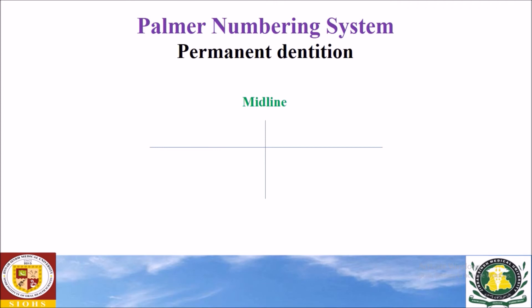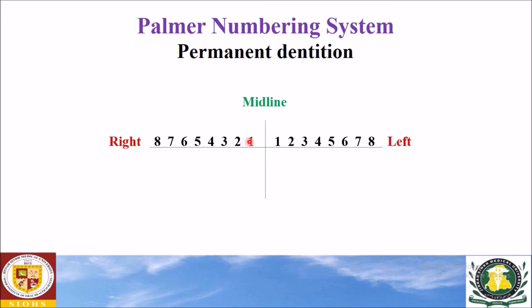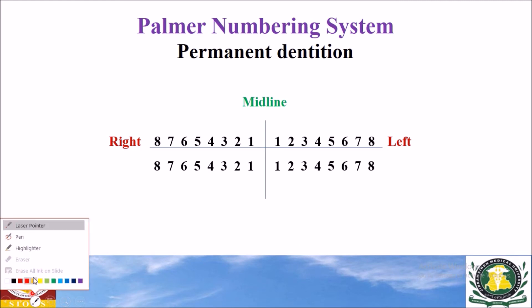Now we will discuss the Palmer numbering system for the permanent dentition. In the permanent dentition, each tooth is numbered starting from the midline, from one to eight in each quadrant. In the maxillary right side, the numbers start with one for the maxillary right central incisor through eight for the maxillary right third molar. Similar numbering applies to the left maxillary arch and the mandibular arch.